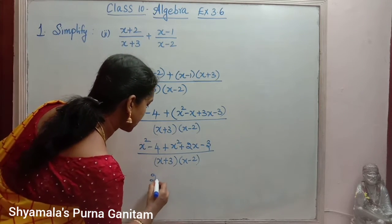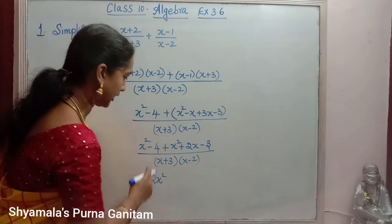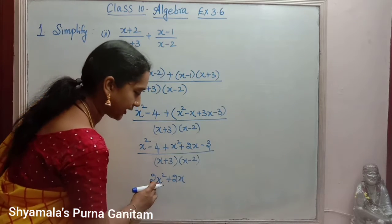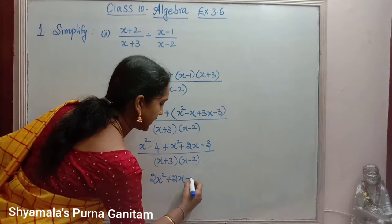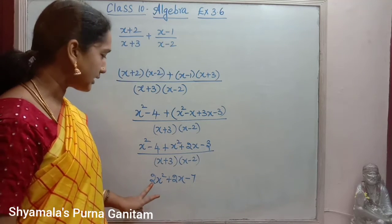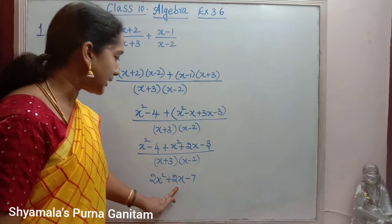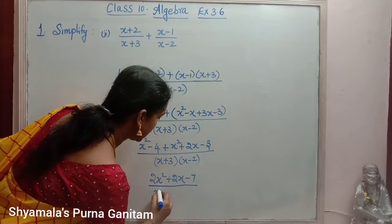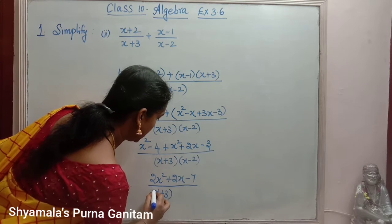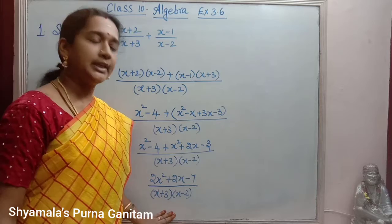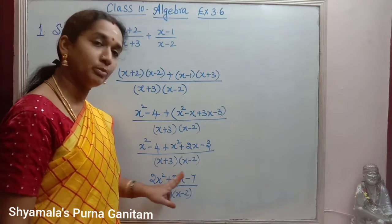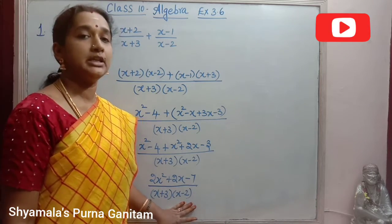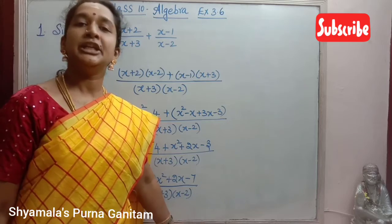Combining the numerator: x squared plus x squared gives 2x squared. For the x terms, minus x plus 3x gives plus 2x. For the constants, minus 4 minus 3 gives minus 7. So the final simplified result is (2x² + 2x − 7) divided by (x+3)(x-2).